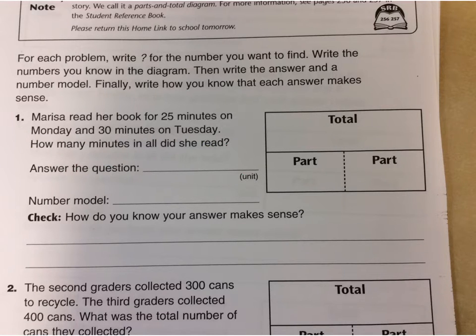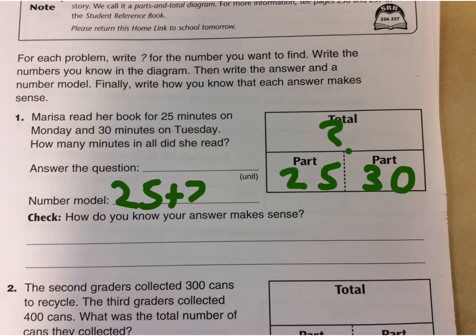So those are your two parts. So 25 on Monday, 30 on Tuesday, and this is what we're trying to figure out. So your number model is going to be 25 plus 30 equals whatever. You can write the answer there.